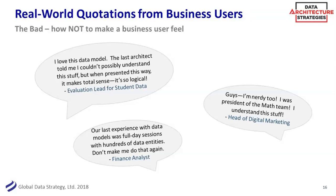The one at the bottom — you may get this pushback: 'data models? We've done that. We had these full-day sessions with hundreds of data entities. They locked us in a room, and I don't want to do that again.' And don't do that to people again. You can be much more agile. You can do workshops, you can use design thinking. The waterfall days of locking someone in a room all day — I couldn't stand that, and I'm a data modeler. So don't do the big bang approach. Do something that makes sense and tells stories that has an impact. Why are we doing this model? Don't make it an academic exercise — make it mean something.